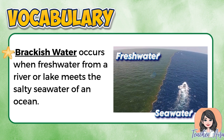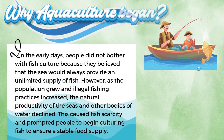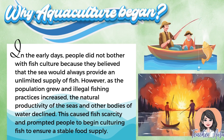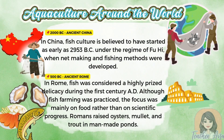Now that we understand these key terms, we are ready to explore today's lesson: why aquaculture began. In the early days, people did not bother with fish culture because they believed the sea would always provide an unlimited supply of fish. But as the population grew and illegal fishing practices increased, the natural productivity of the seas started to decline. Fish became harder to catch and scarcity was felt in many communities. This problem led people to look for a solution — fish culture. By raising fish in ponds, cages, and hatcheries, they were able to ensure a more stable and sustainable food supply.